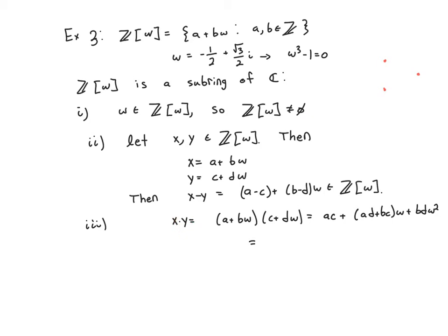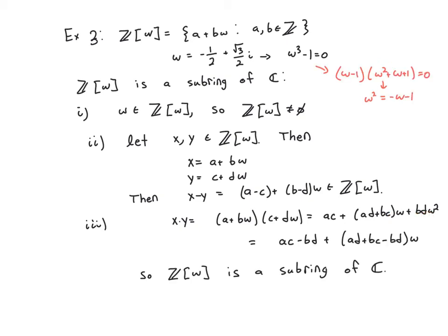Finally, let's do X times Y. That one's a little less obvious. Take these two numbers. Let's FOIL it first. First, outer and inner both involve an omega term, so you can factor out the omega. And the last term is BD omega squared. How do you get around that omega squared? Well, if omega cubed minus 1 is 0, factor out this omega minus 1, and you get omega squared plus omega plus 1 equals 0,